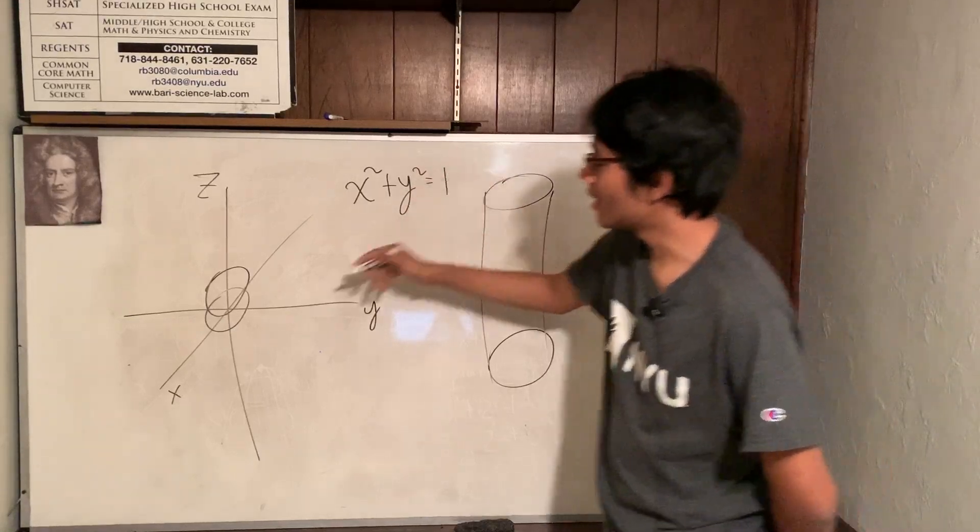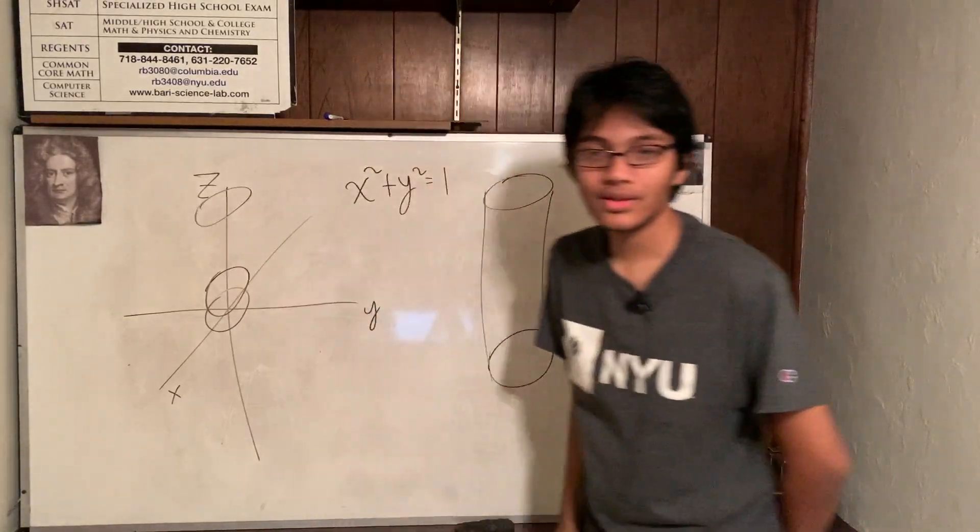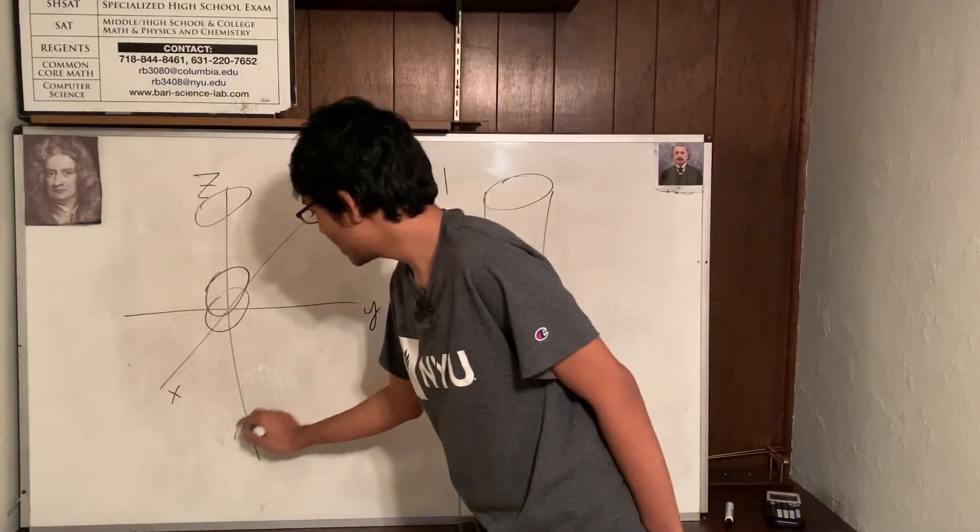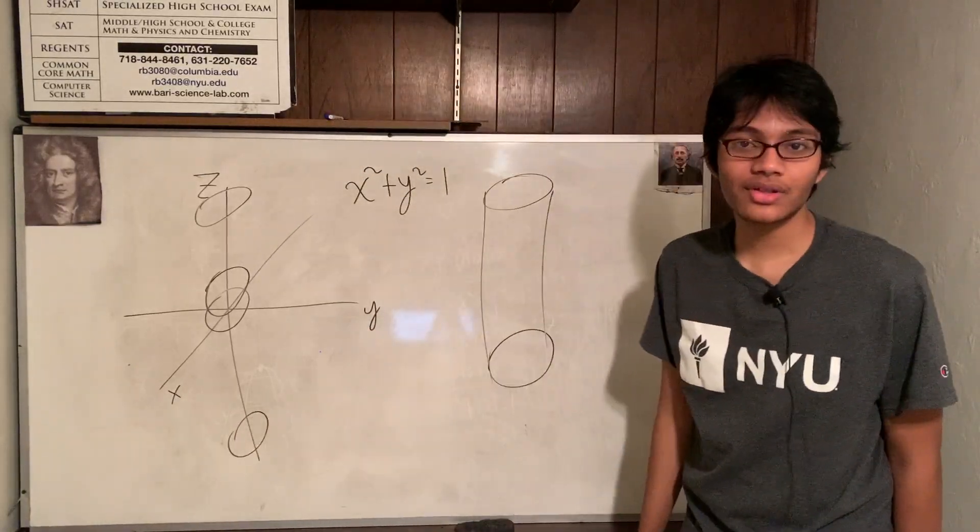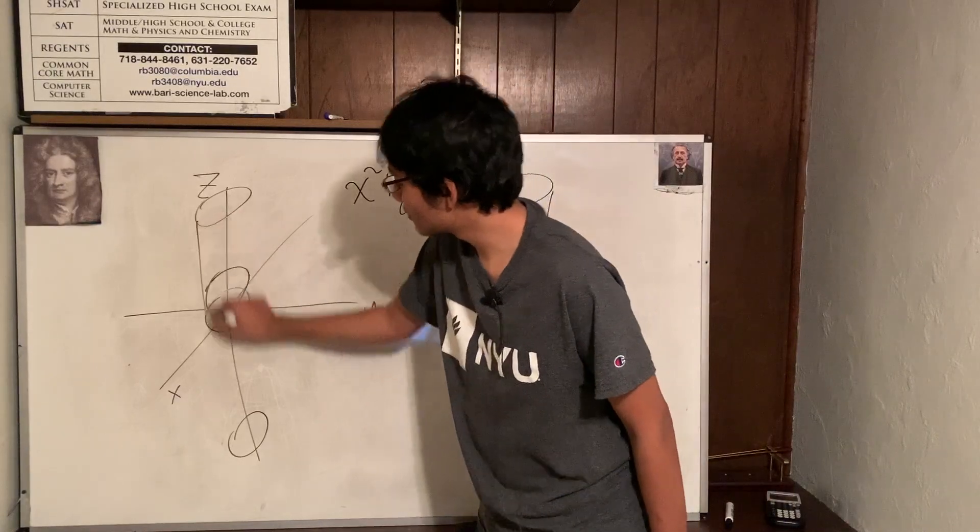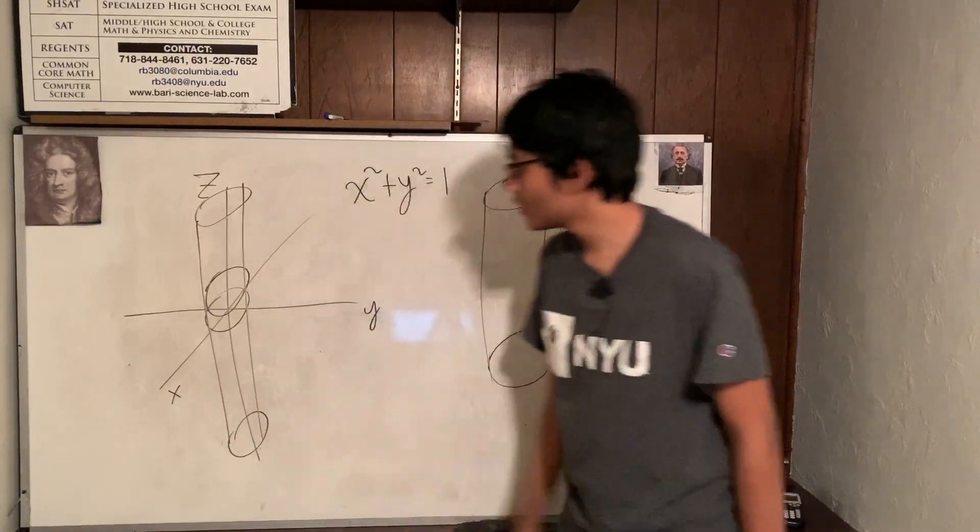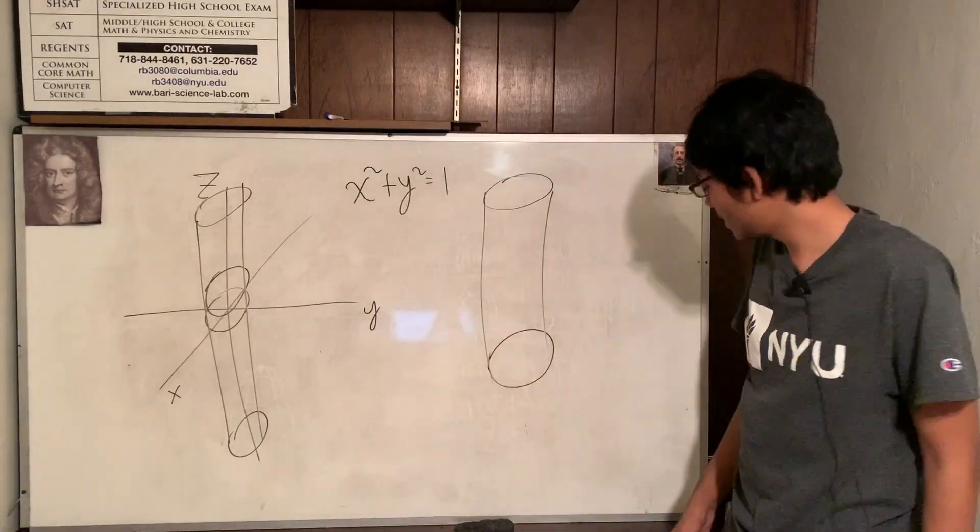So, you can make Z a 100. You'd still have a circle with radius of 1. Make Z negative 100. You'd still have a circle with radius of 1. So, connect all of these guys and you end up with a cylinder. What do you know?